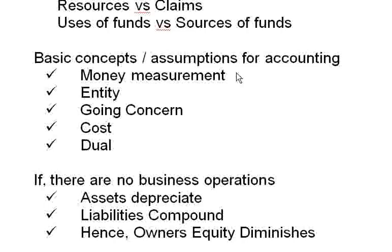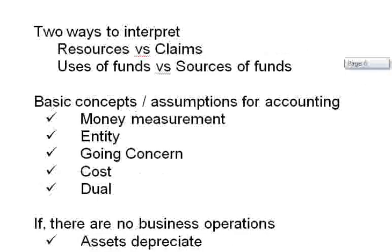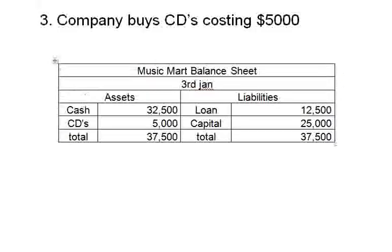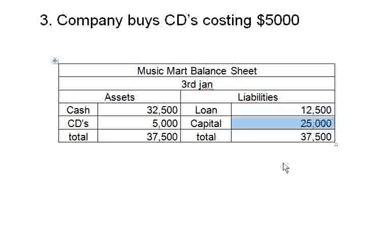Now let's look at what happens if there are no business operations. I have opened a business, purchased some CDs, and this is my position on January 3rd. If I don't do anything from now, the value of CDs will fall because people prefer newer CDs, and the loan will accumulate interest charges so its value will increase. On the right side quantities increase, on the left side quantities decrease, but the balance sheet must still balance — the difference shows up as vanishing capital.